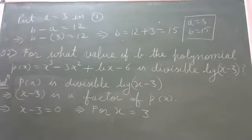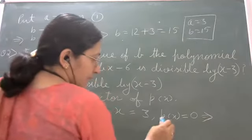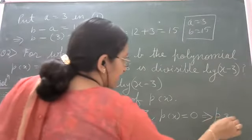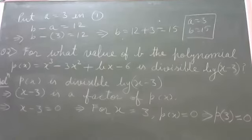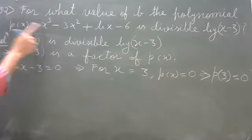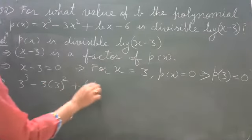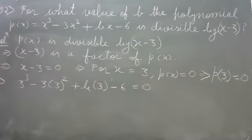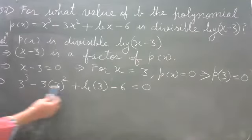Since x equals 3 makes P(3) equals 0, substitute x equals 3 into the polynomial: 3 cube minus 3 into 3 square plus b into 3 minus 6 equals 0. This gives an equation with only variable b, and we can find b since all other values are known.